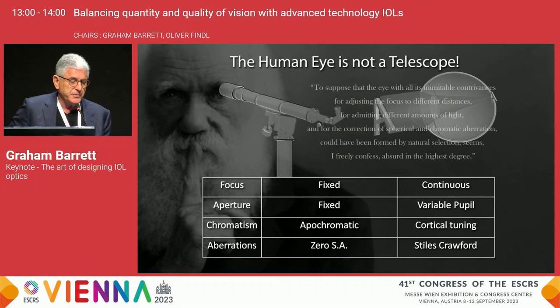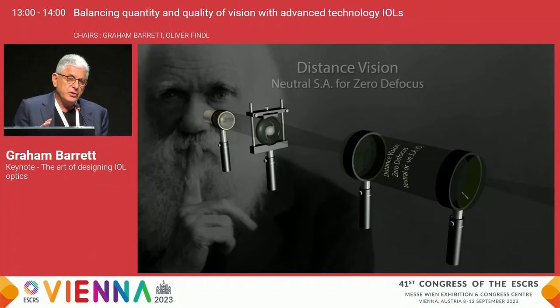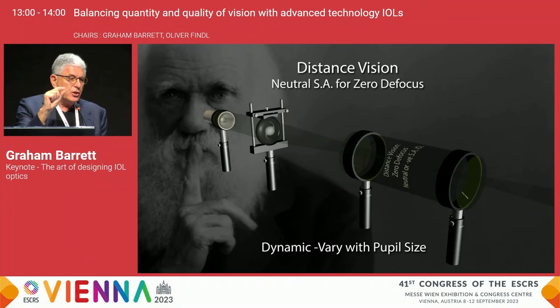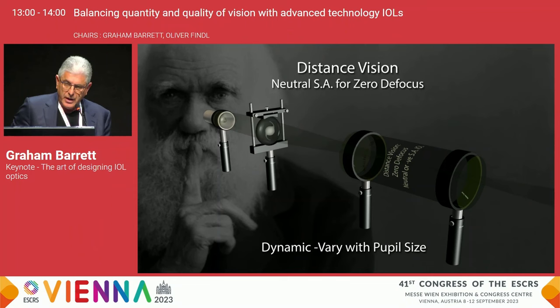We don't have to worry about chromatic aberration because we have cortical filters. We even have a retinal architecture which reduces the impact of spherical aberration — the Stiles-Crawford effect. On the optical bench, for a target fixed at a certain distance, no spherical aberration may be optimum. But in reality, aberrations, pupil size, and focal range are dynamic.